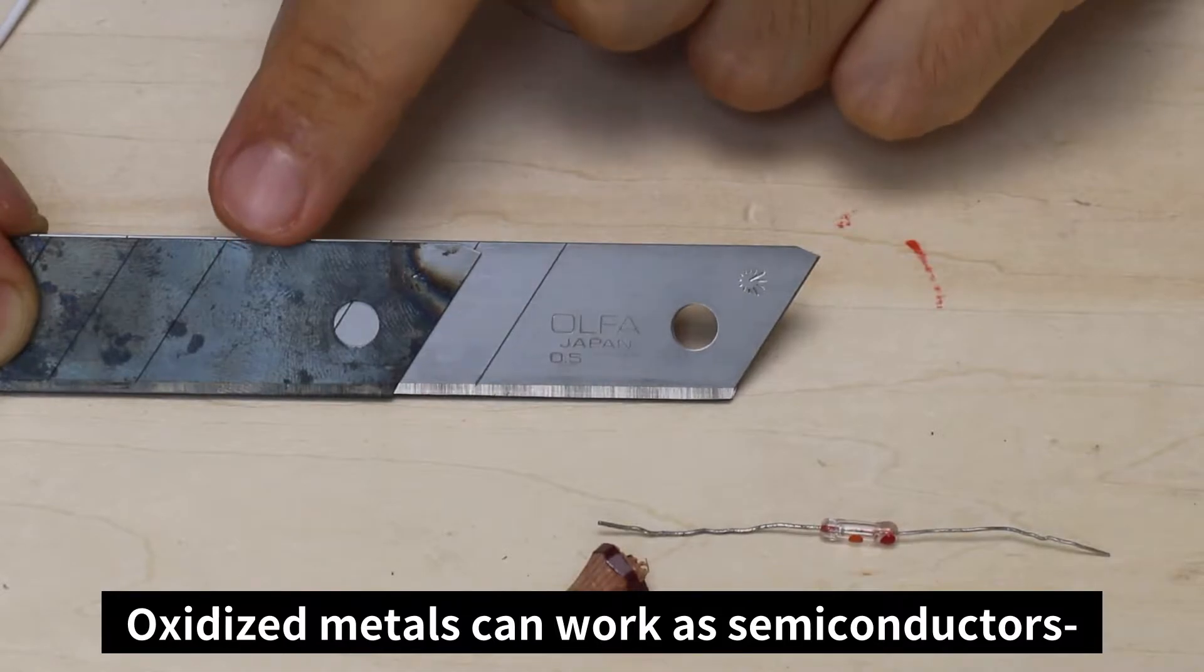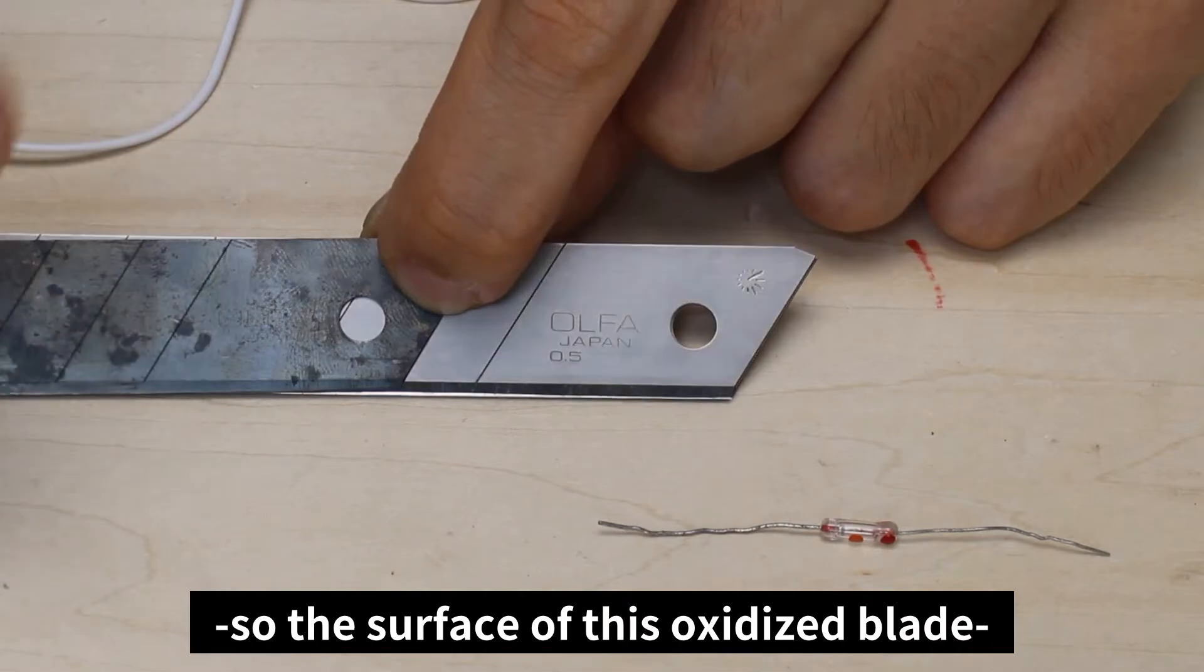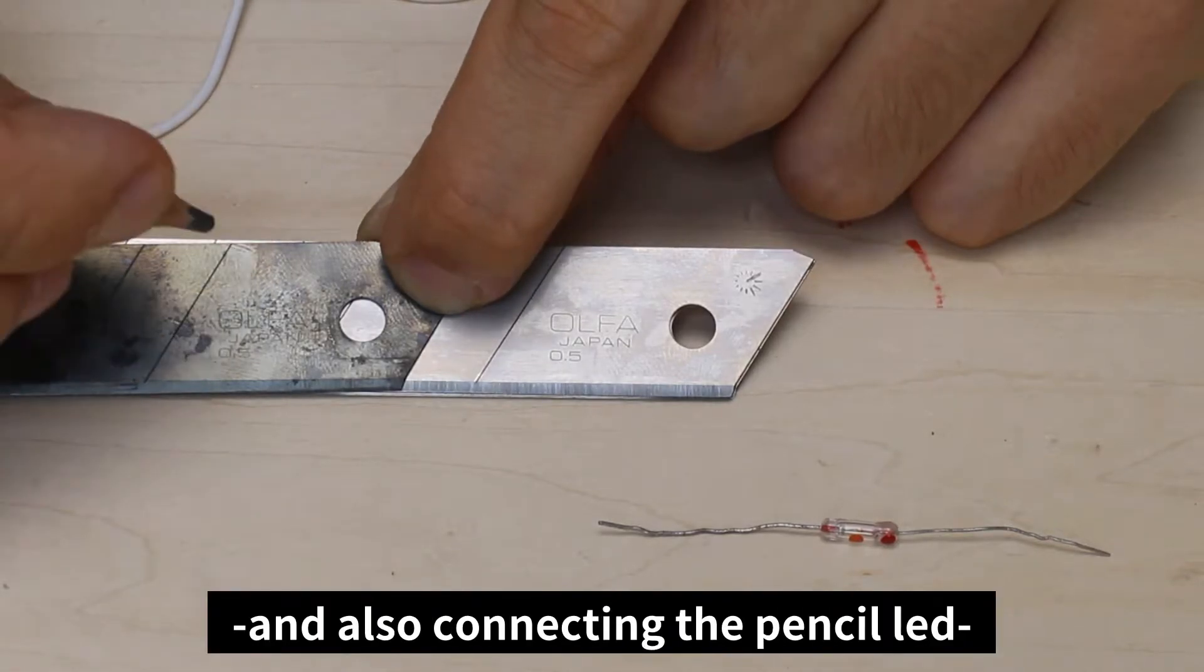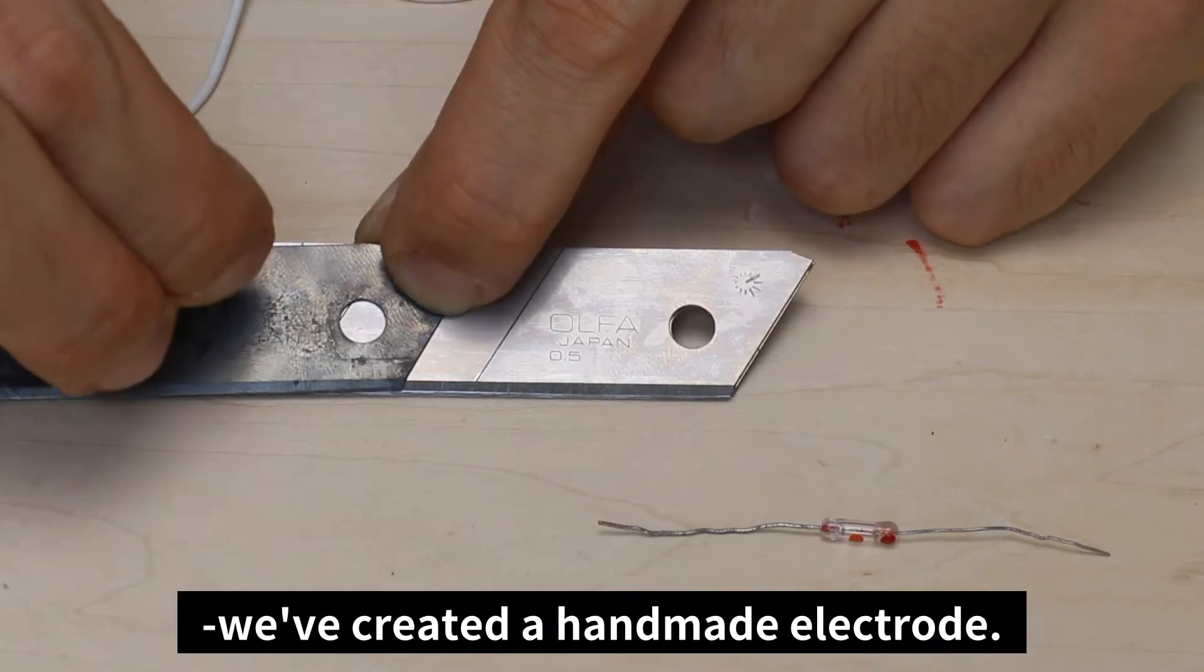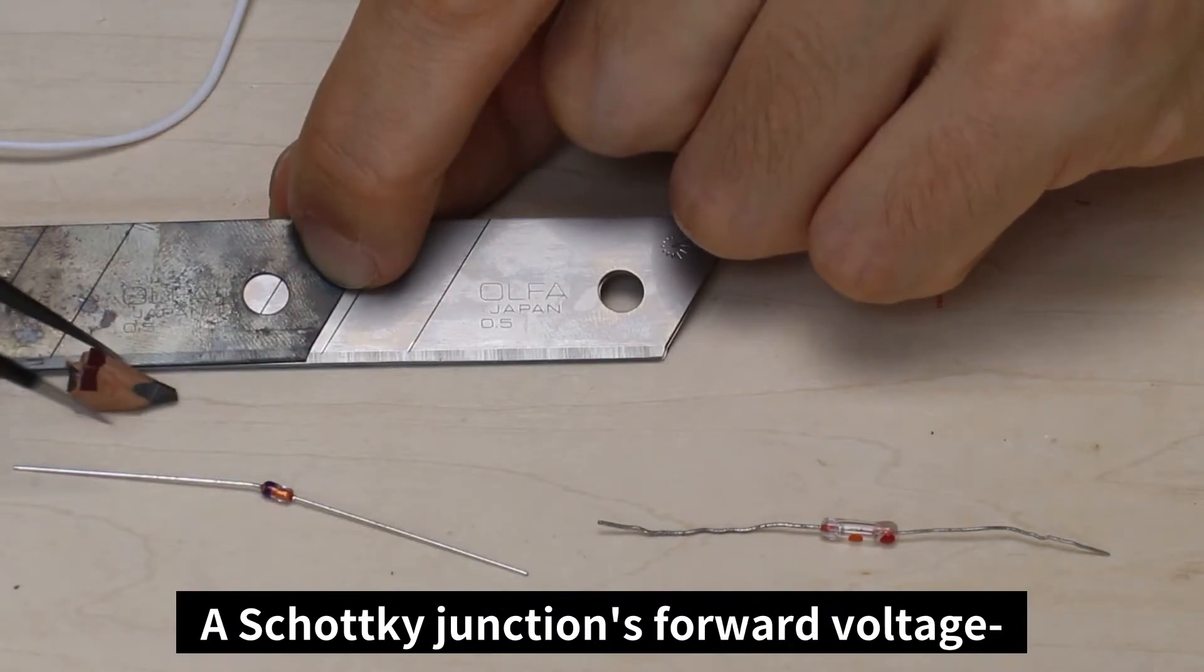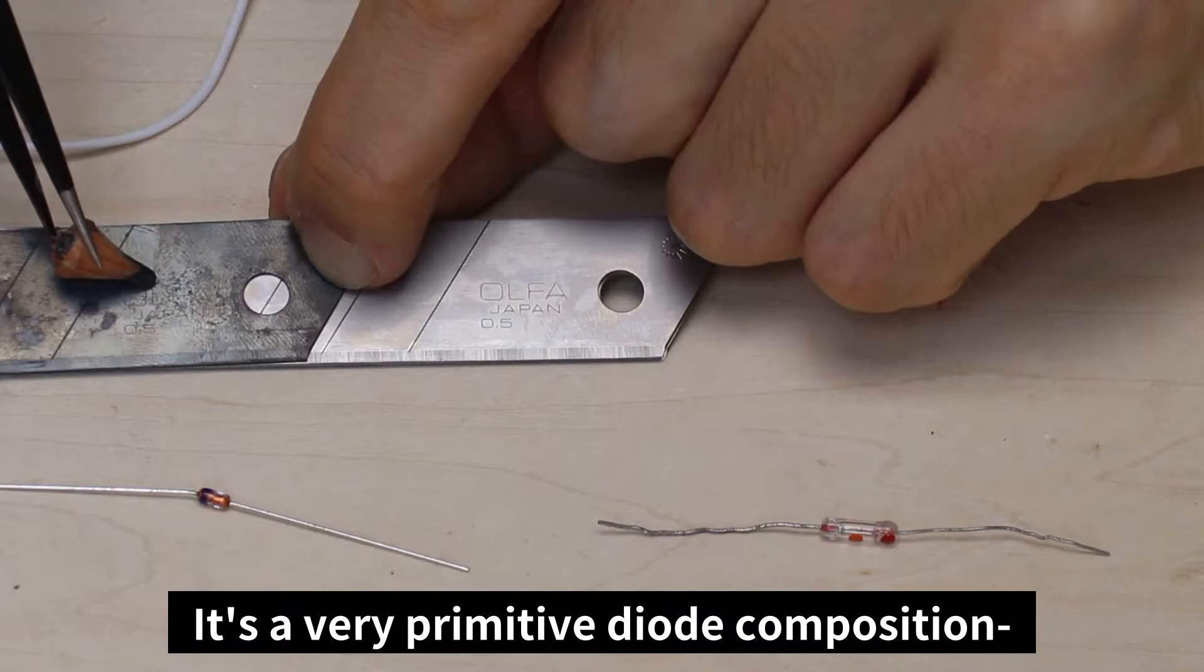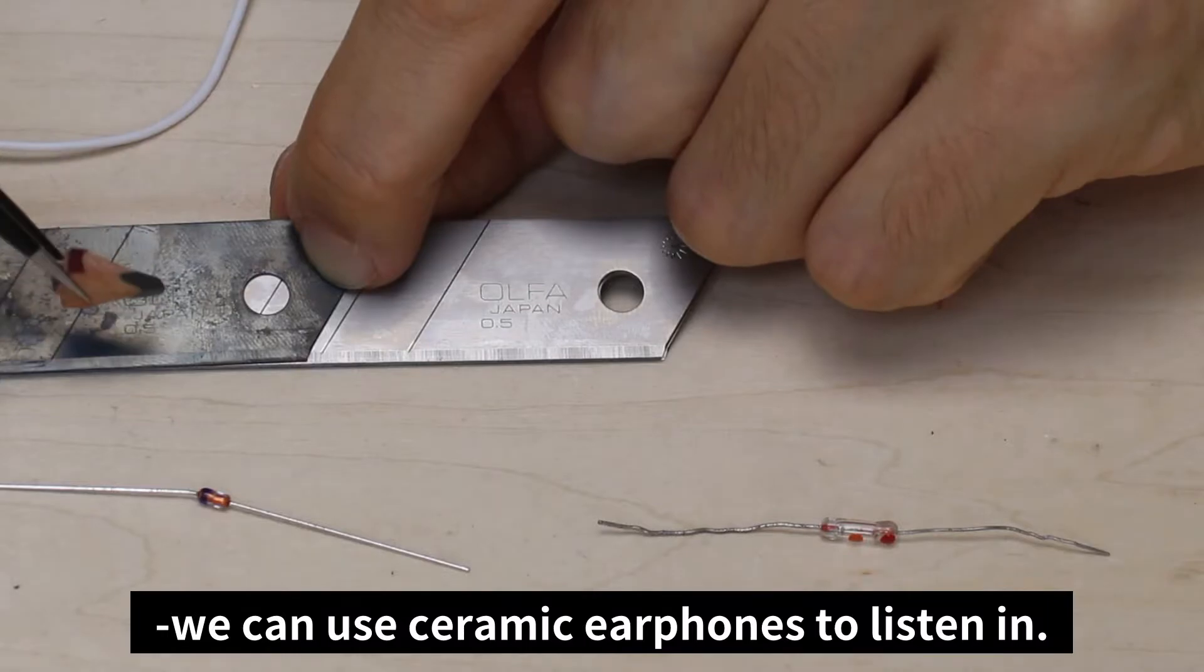Oxidized metals can work as semiconductors, so the surface of this oxidized blade will work as a semiconductor. By connecting the needle electrode to the cutter blade, and also connecting the pencil lead, we've created a handmade electrode. By the way, this is a Schottky junction. A Schottky junction's forward voltage is smaller than that of a PN junction diode. It's a very primitive diode composition, but as the forward voltage is low, we can still use ceramic earphones to listen.